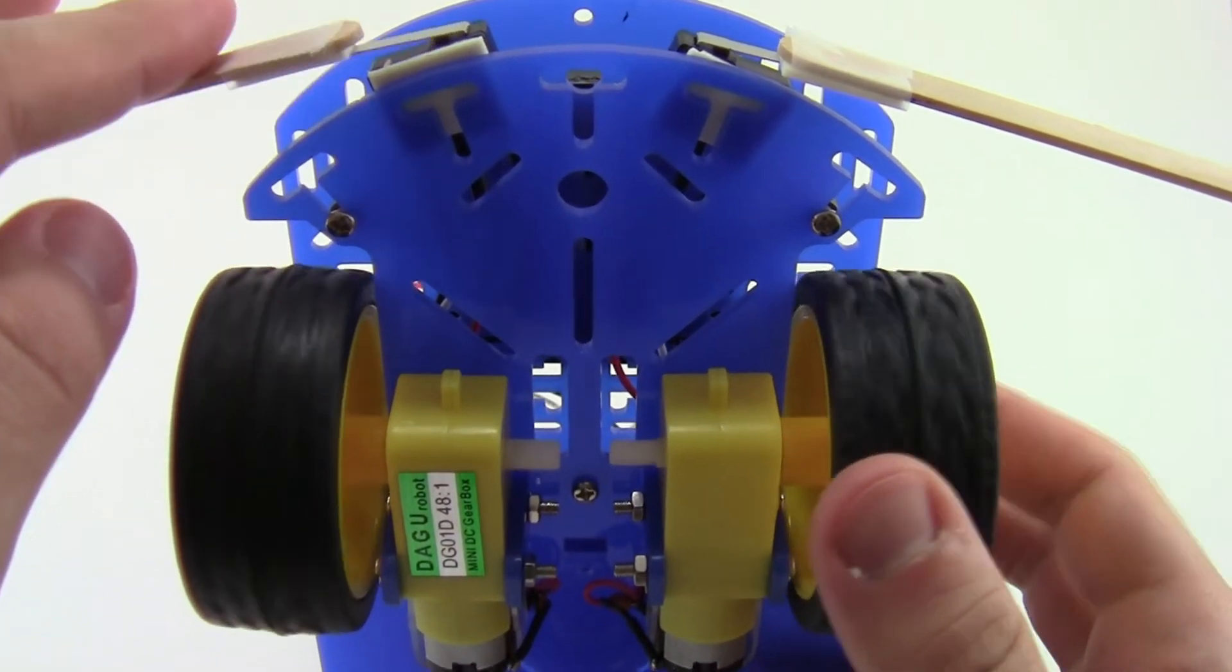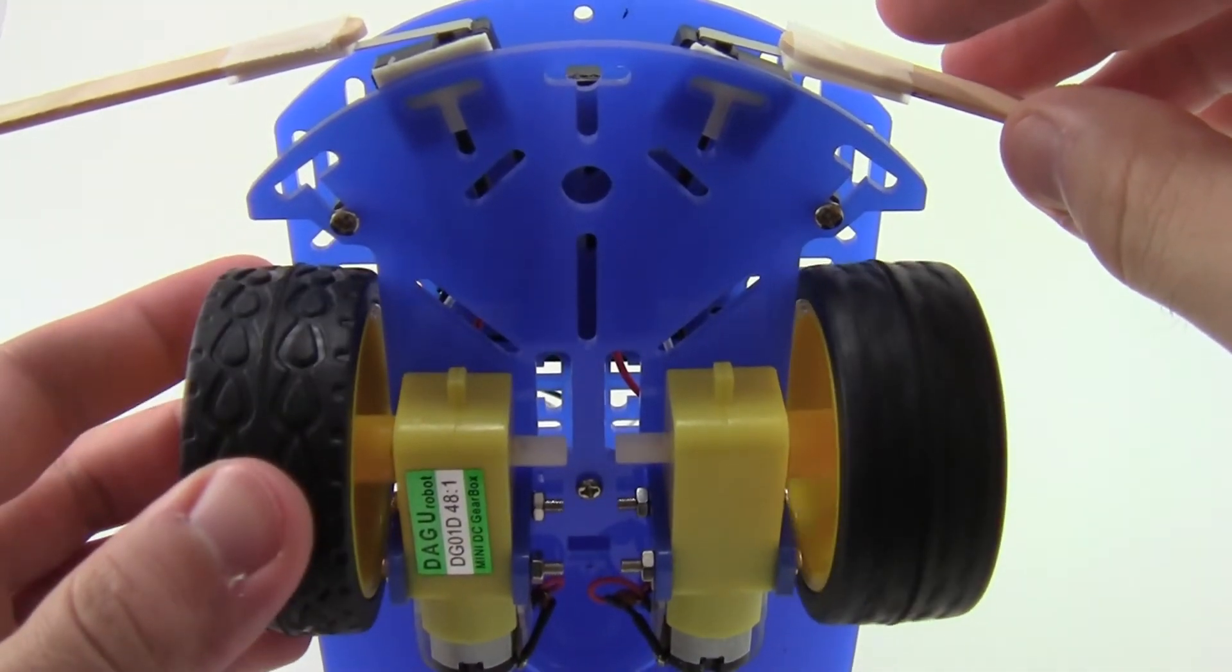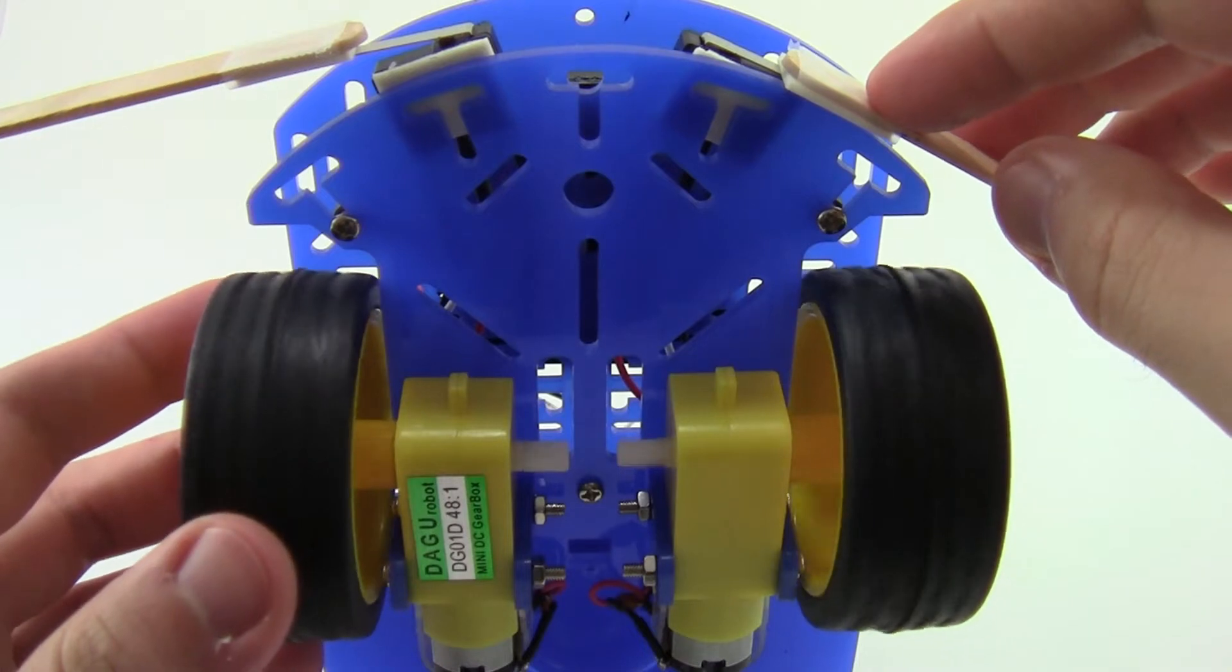When I press down on the bump sensor, the wheel on the opposite side of the robot reverses direction. When one wheel spins forward and the other one goes in reverse, this makes the robot turn.